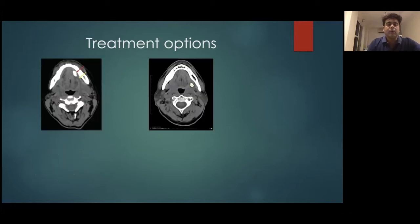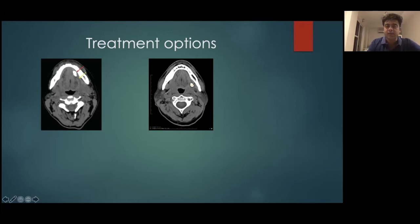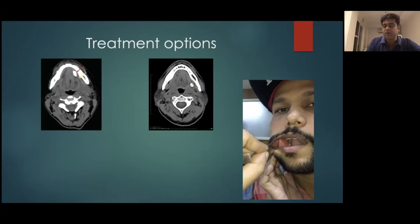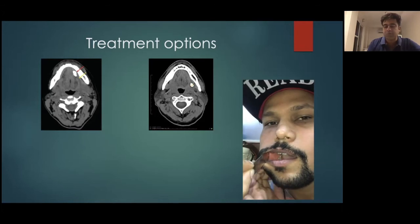Regarding treatment, I call this the 'shifting stone concept.' When a stone is anteriorly placed, it's an ideal situation — you just make a stab incision in the floor of mouth, take out the stone, and the patient is cured. However, if the same stone is three centimetres posteriorly, our approach changes and we advocate for gland excision, whereas the premise should be the same: remove the obstruction and you're done. For the parotid, a posteriorly placed stone leaves us to just do a massage and hope for the best.